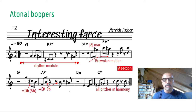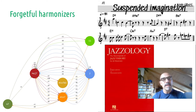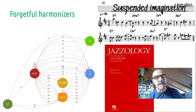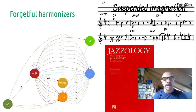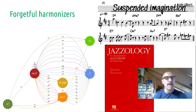The form module randomly chooses among various section structures; here section A has a standard 8-bar length. The second technique, Forgetful Harmonizers, is obtained by reversing some assumptions of Atonal Boppers. Here the rhythm module exploits a time-tape module: time is initially filled with quarter subunits, then some events are deleted according to a density parameter, creating rests. This process yields irregular rhythmic groups.